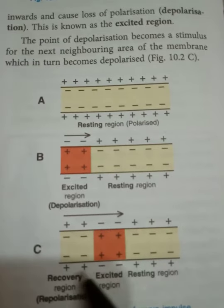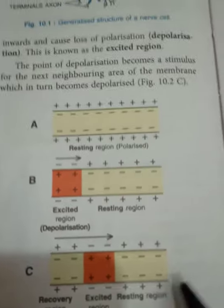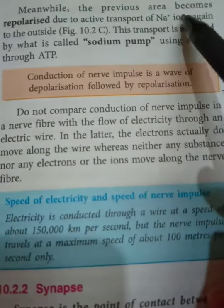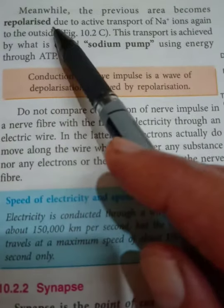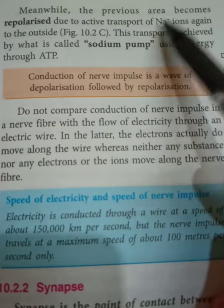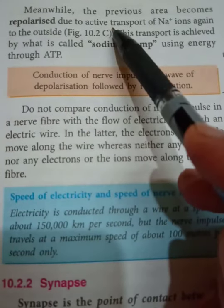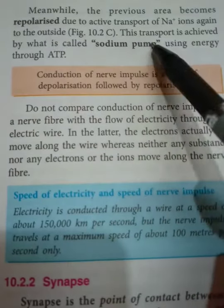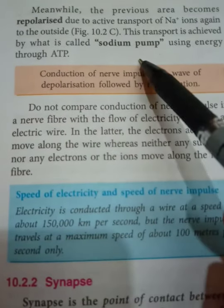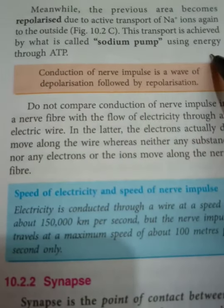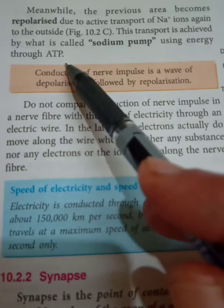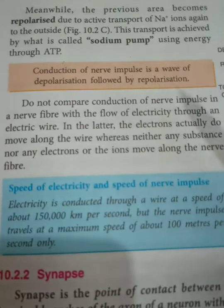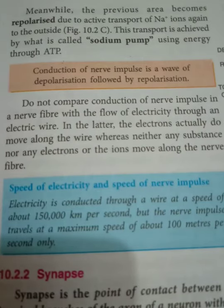Meanwhile, the previous area becomes repolarized due to active transport of sodium ions back outside, using energy. This transport is achieved by what is called the sodium pump, using energy through ATP. This is how transmission of nerve impulse takes place.